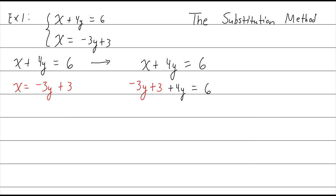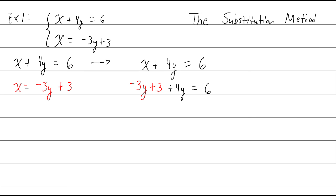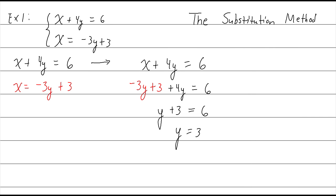We have that x is actually equal to negative 3y plus 3 — they are the same, so you can use them interchangeably. What I'm going to do is take the x in the first equation and replace it with negative 3y plus 3. The benefit is that now I'm looking at an equation with only one type of variable — just y. Before, all of my equations had two variables: x and y. Two equations with two variables has now been transformed into one equation with one variable.